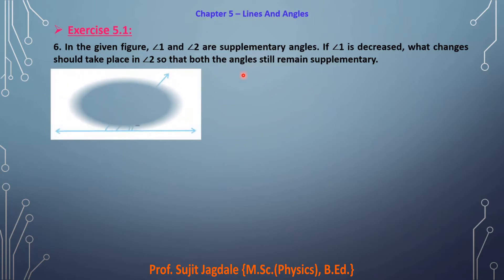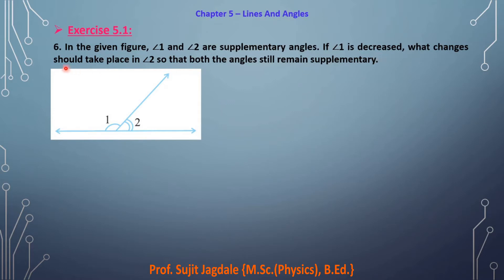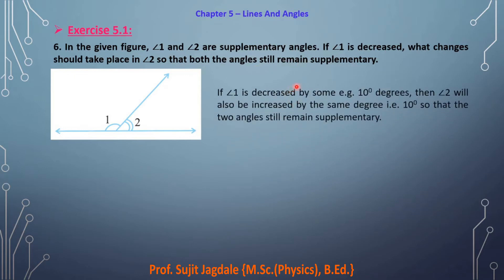Question 6: Two angles are supplementary — angle one and angle two are given in the image. Supplementary means their sum is 180 degrees. If angle one is decreased, what change should take place in angle two so that both angles still remain supplementary? Therefore, if we decrease angle one by a certain amount — say 10 degrees — then angle two should be increased by the same amount, 10 degrees, so that they remain supplementary.